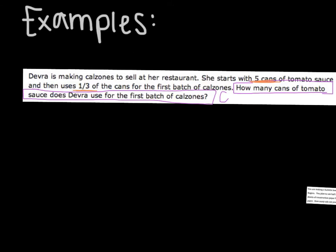Then step number three. You're going to read again for a third time and circle operations and put a sign with them. So Debra is making calzones to sell at her restaurant. She starts with five cans of tomato sauce and then uses a third of the cans for the first batch of calzones.